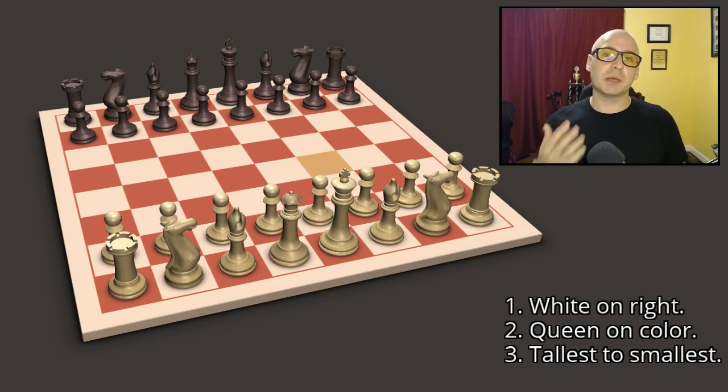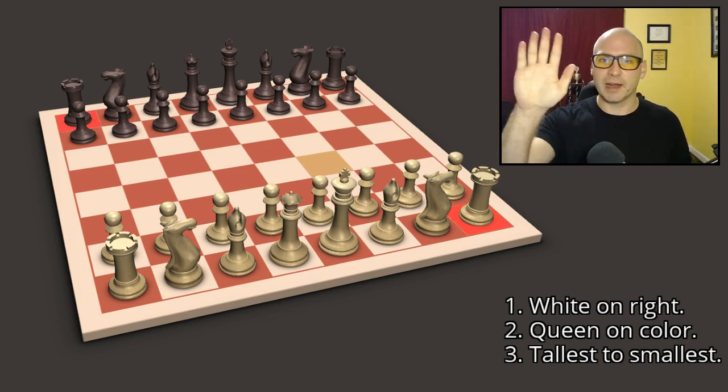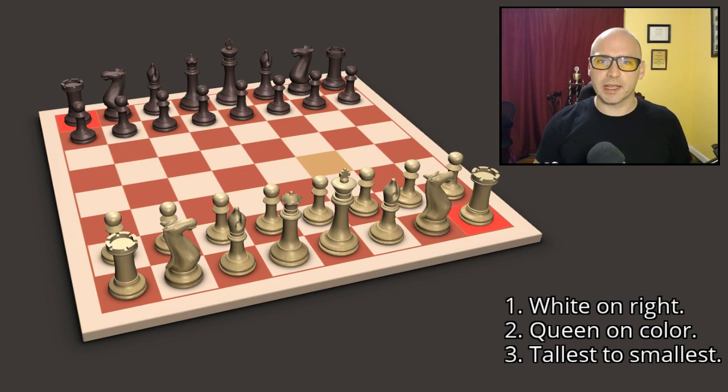But many people do make mistakes in setting up the chess board. Particularly people who make movies often get this first thing wrong. We always want a white square on our right hand side. So we have our right hand, we have a white square in that corner for both the white and the black player.